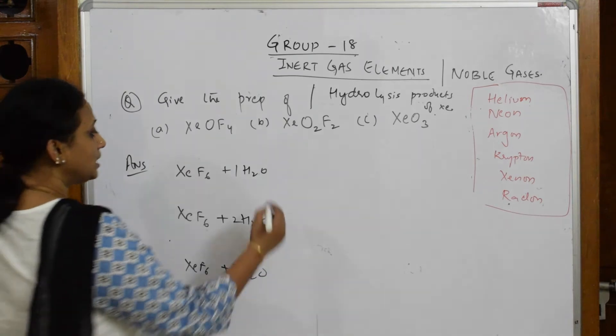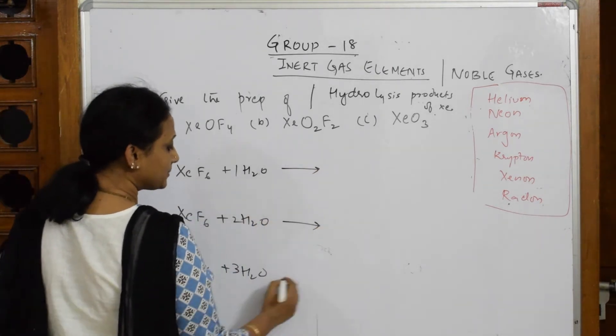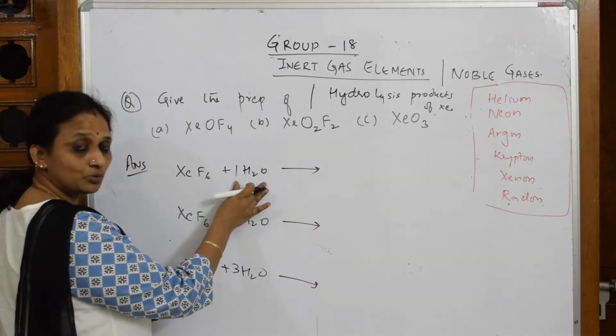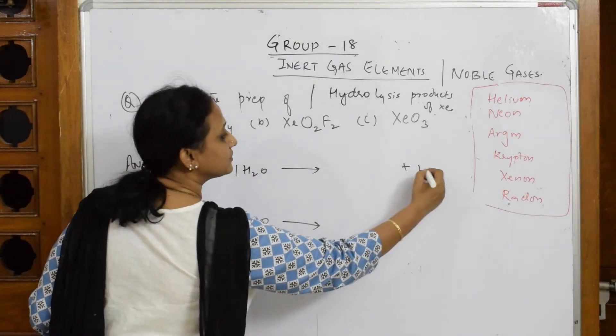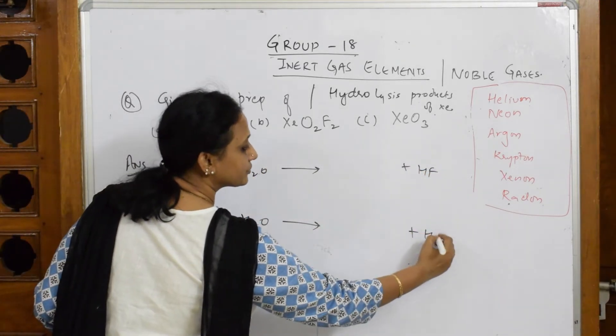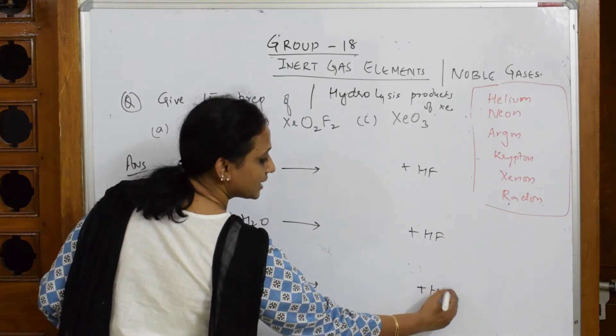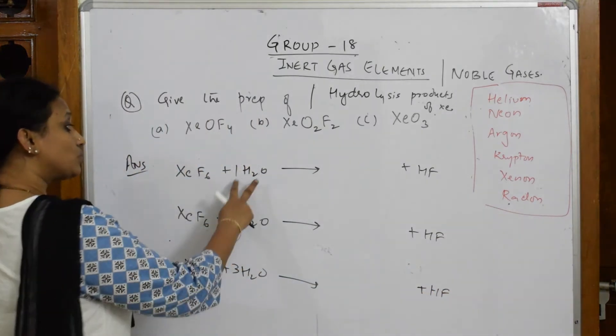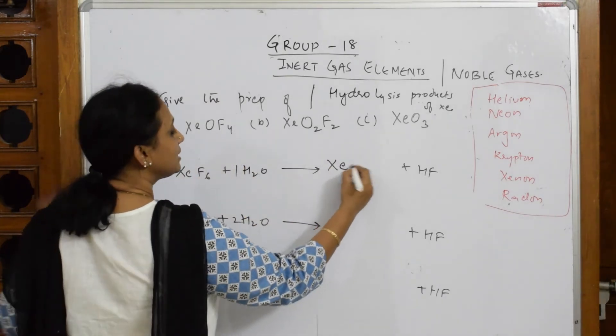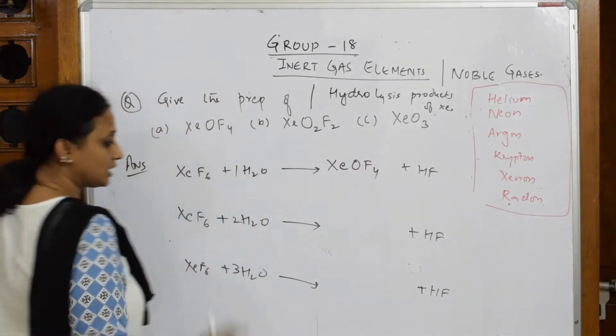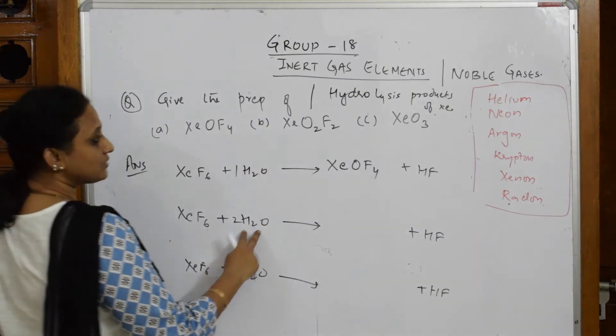Important thing: whenever you take one mole of this, the product you get—let's write the common thing first: HF everywhere. You get HF, hydrofluoric acid. When you take one mole, the product is XeOF4.